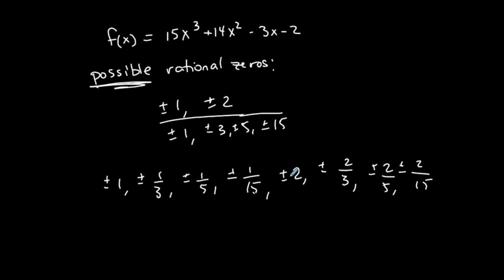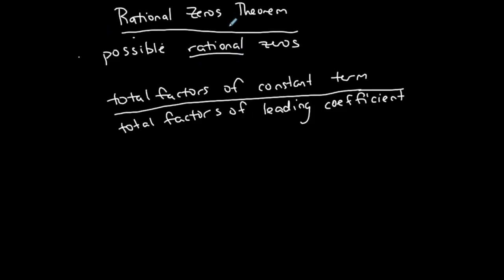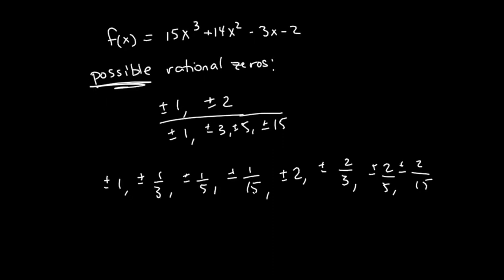There are 2, 4, 6, 8, 10, 12, 14, 16 total possible rational zeros. This is the Rational Zeros Theorem — it just tells us the list of possible rational zeros; it does not tell us which ones are actually zeros. We would have to plug these in to determine if they are actually zeros. For now, I'm just listing the possible rational zeros. In the next video, I'll show you where we go from there.